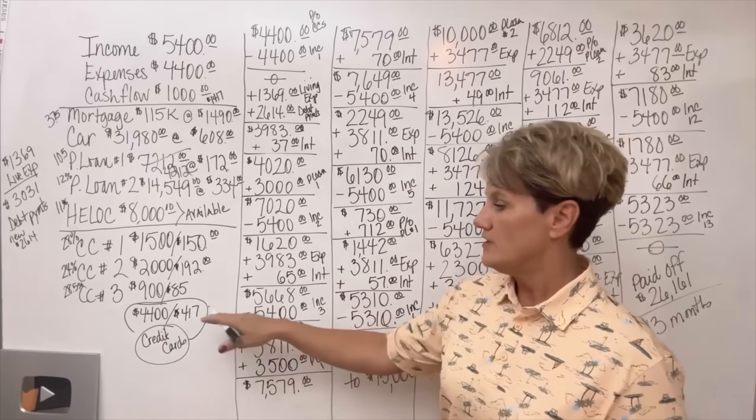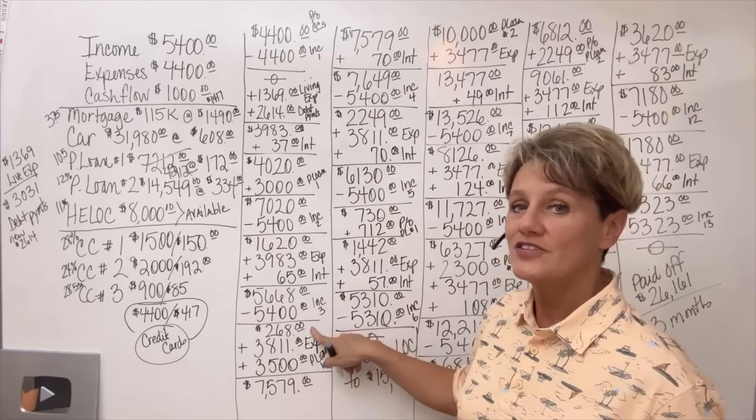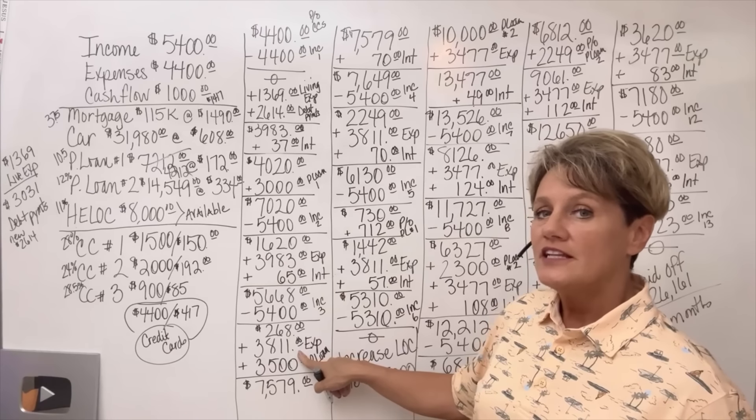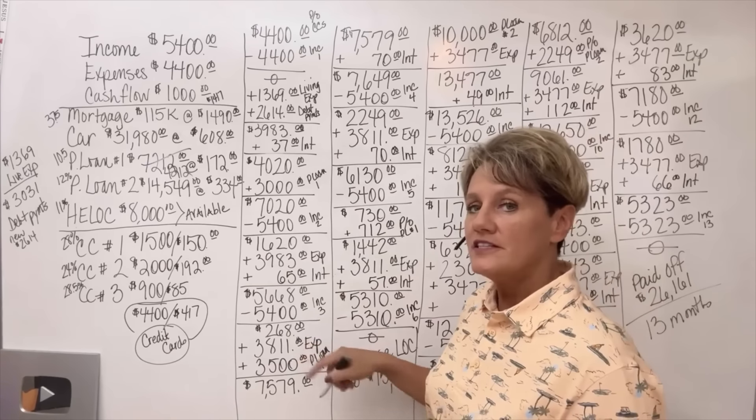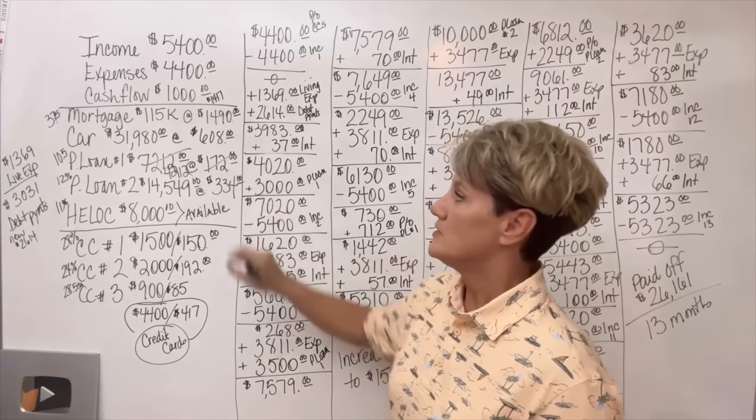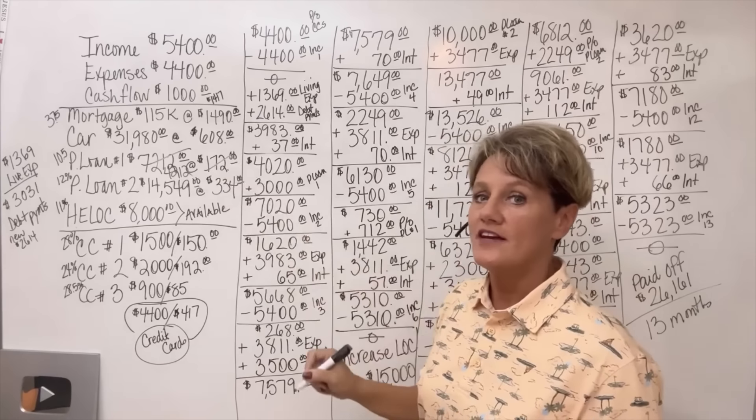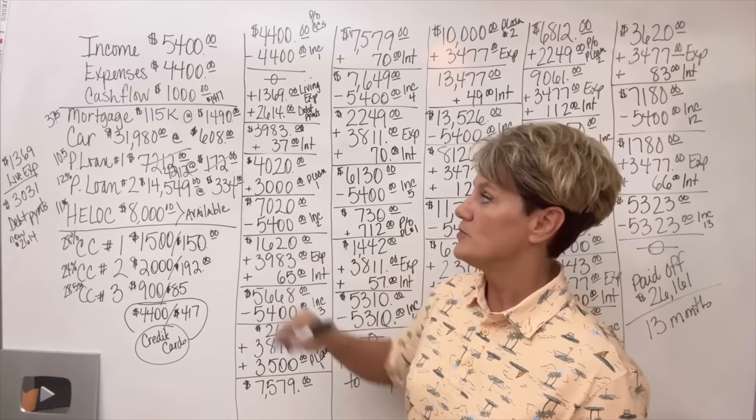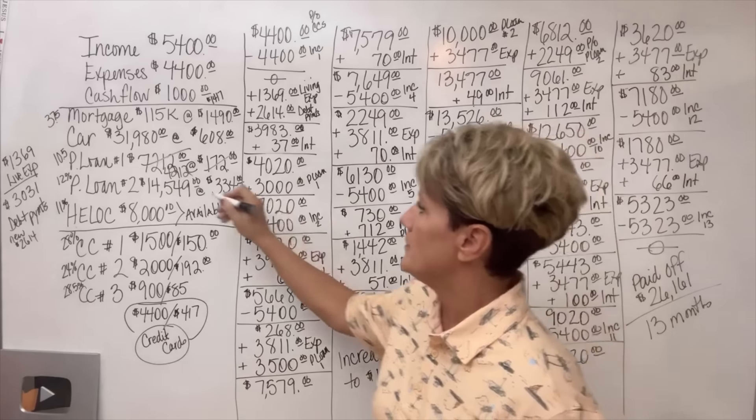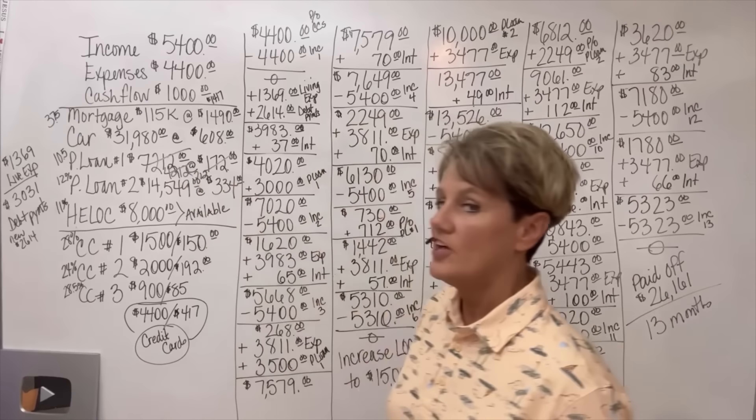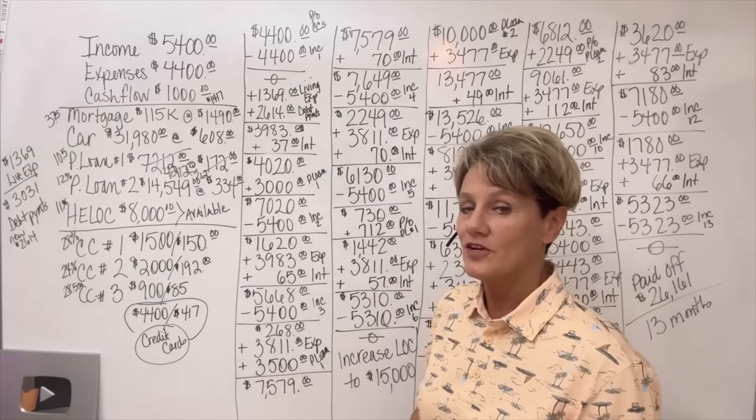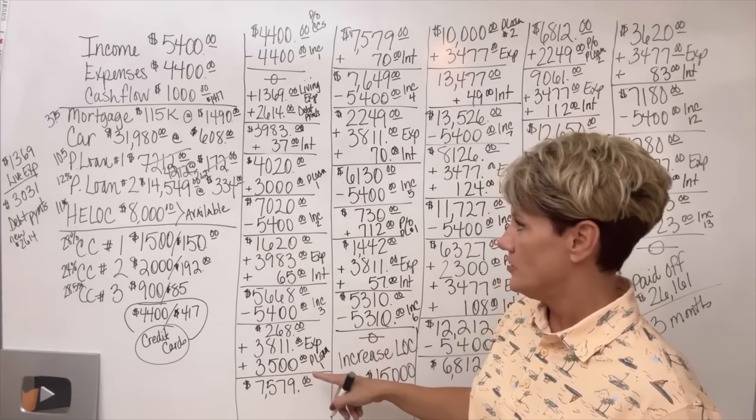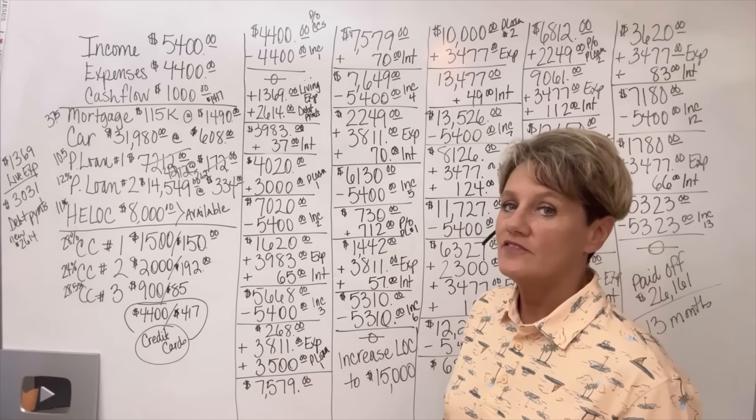In month three, his income goes in again, bringing him down to $268. We're going to bring his expenses in at $3,811. How come the expenses came down in this month? Because this payment was satisfied when we did the $3,000 chunk. We're going to do another $3,500 chunk onto this personal loan, meaning that his balance now is only $712. See how quickly we're paying off that personal loan just by using a line of credit? After the $3,500 is paid onto personal loan number one, his balance is back up to $7,579.